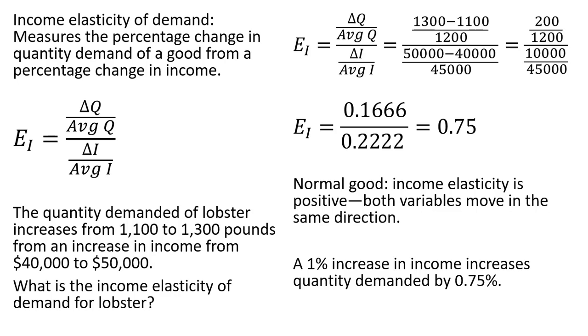To interpret this coefficient, a 1% increase in income increases the quantity demanded of lobster by 0.75%. Let's do a second example.